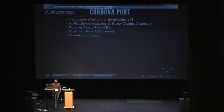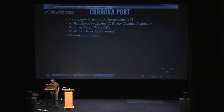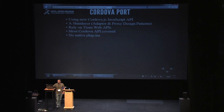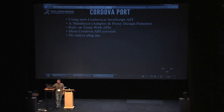Let's talk about how we did the port. First, we started to port using the legacy API of PhoneGap. But when we contacted Brian, he told us about the new architecture of Cordova, so we did it that way. It is mostly a shim layer using adapter and proxy design patterns. It relies on Tizen web APIs. Currently, most Cordova APIs are covered, and there are still no native plugins, as Tizen does not have native code.